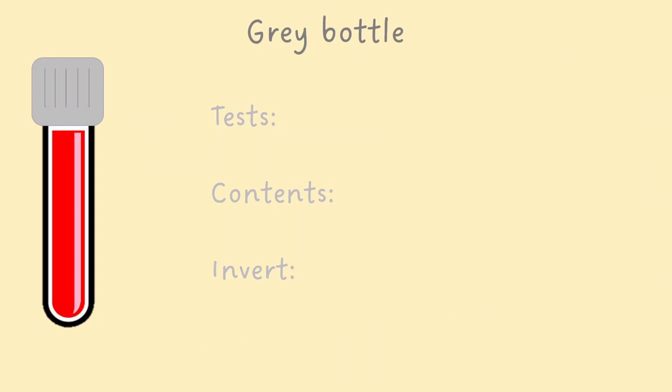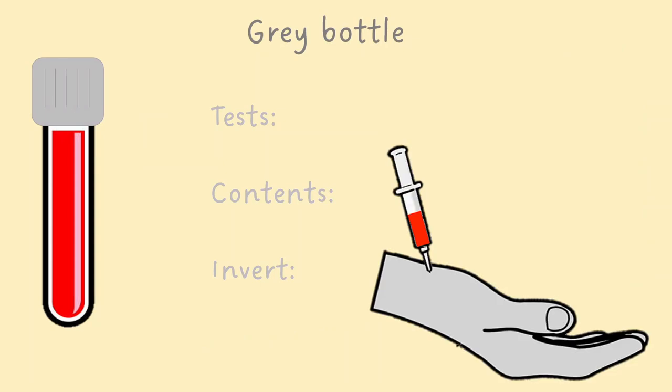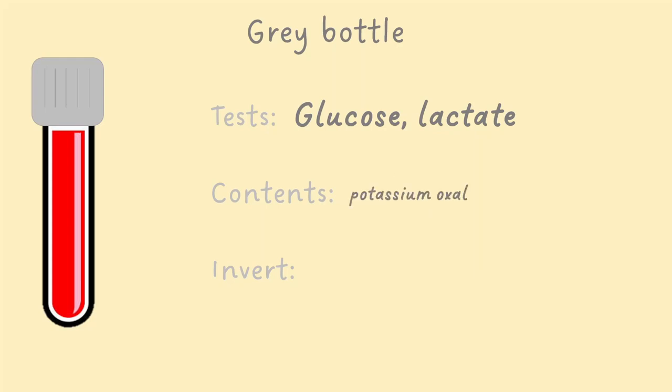The grey bottle is less commonly used, as most information you can get from these can be obtained faster using a venous or arterial blood gas, for example glucose and lactate. These bottles contain potassium oxalate, which acts as an anticoagulant, and sodium fluoride, which prevents glucose breakdown. This should be inverted eight times.